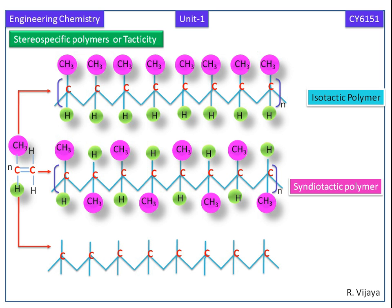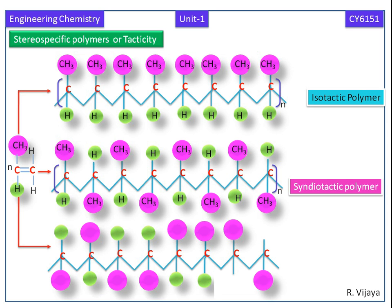Here we can see how the arrangement of functional groups are in disordered manner. If the functional groups are arranged in disordered manner in the polymer chain, it is called atactic polymer.